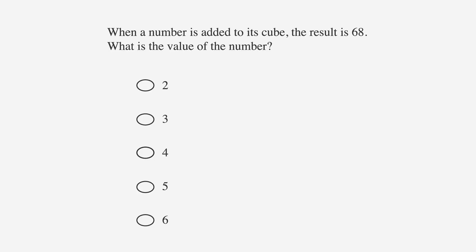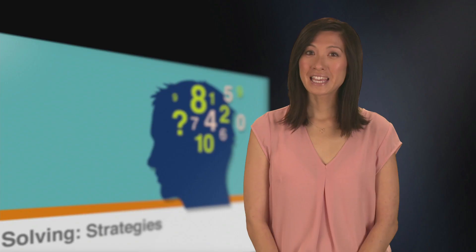When a number is added to its cube, the result is 68. What's the value of the number? The answer choices are 2, 3, 4, 5, and 6. Keep in mind that the cube of any number is that number to the third power.